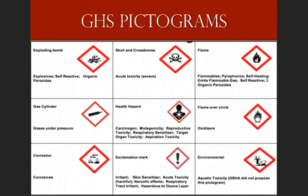An exclamation mark pictogram is used to portray health hazards relating to acute toxicity, skin irritation, eye irritation, specific target organ toxicity, narcotic effects, and skin sensitization. Please note that the exclamation mark pictogram cannot be used when the skull and crossbones pictogram is in use. Furthermore, the exclamation mark pictogram cannot be used for skin or eye irritation if the corrosion pictogram is in use. Similarly, if the health hazard pictogram is in use to indicate a respiratory sensitization hazard, the exclamation mark pictogram may not be used either in that particular scenario.